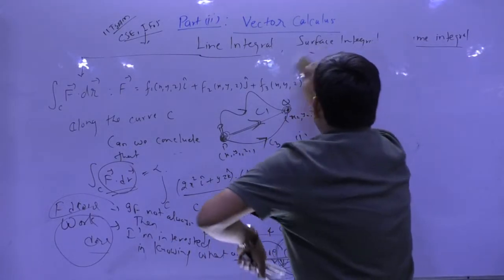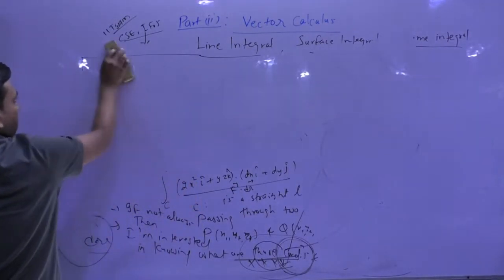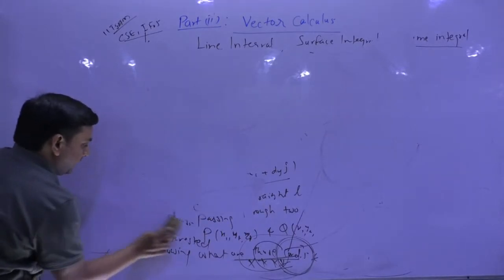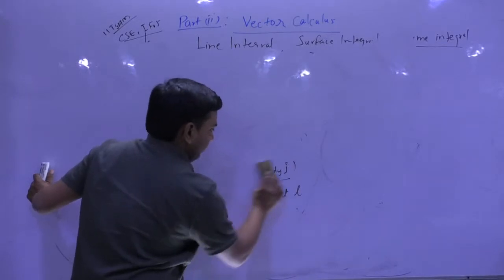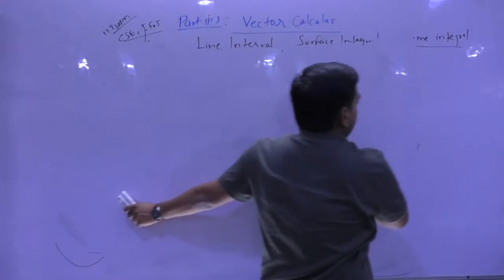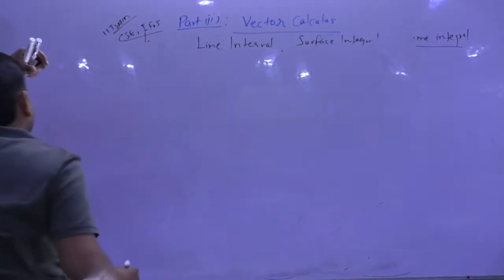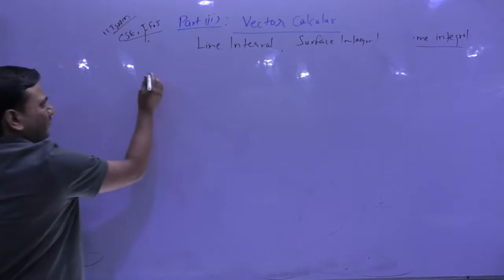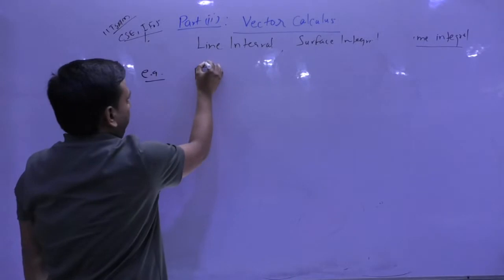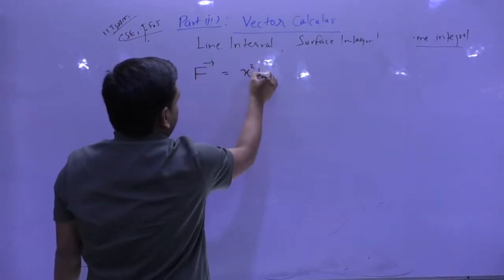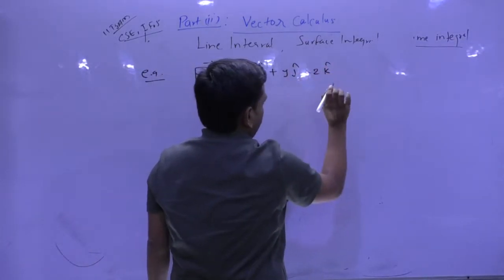Let's see some questions for this. I will guide you how to deal with line integral questions whenever some specified form is given. Suppose that f vector is x² î + yz k̂ minus 2 k̂, something like that.